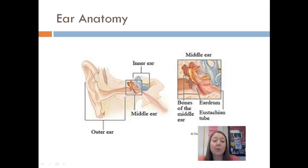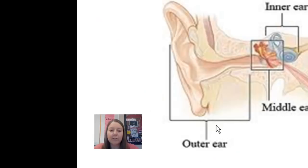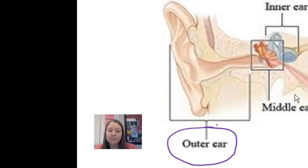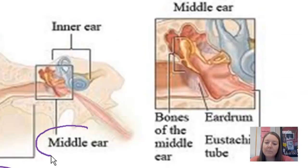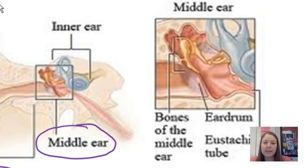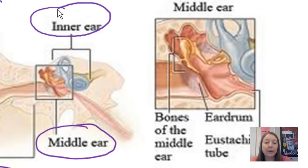Let's break the ear anatomy into three regions. The first one we'll discuss today is the outer ear, and then the middle ear, as well as the inner ear.